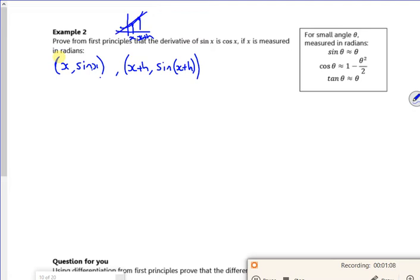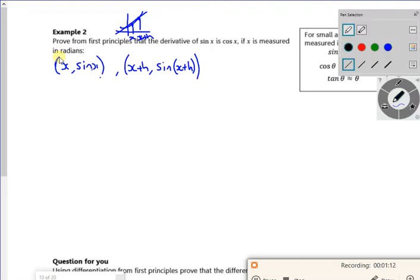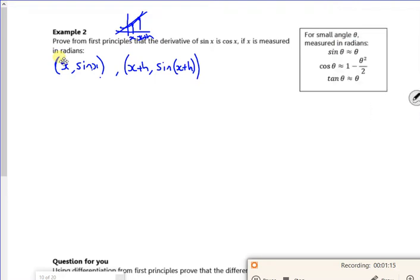So remember, the way I've told you to do first principles, which might be slightly different to how other teachers show it, is to work out the gradient between the two points. So that would be sin of x plus h minus sin x, and then x plus h minus x. Changing y over changing x.